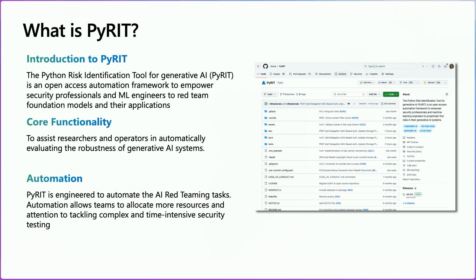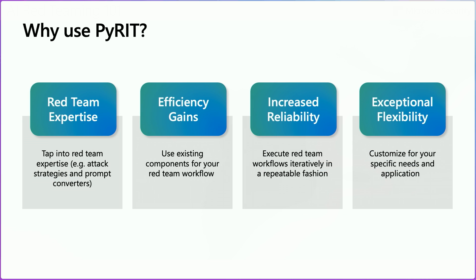Pirate wants to automate a lot of these AI red teaming tasks so that it would allow operators to focus on some of the harder to automate, more time-consuming and time-sensitive security tests. Now, why would you want to use Pirate? There are really four main things that we've baked into Pirate that we think make it very appealing for AI red teaming operators. The first one is red team expertise.